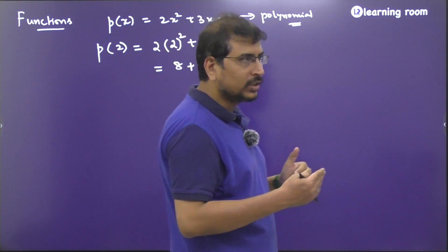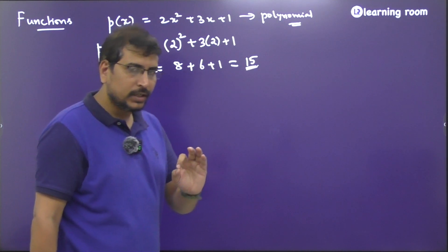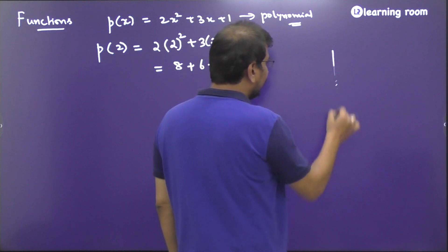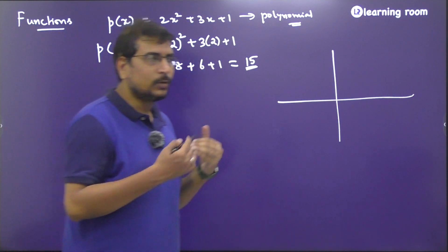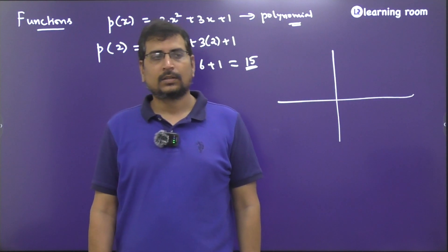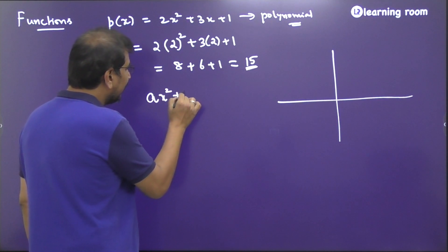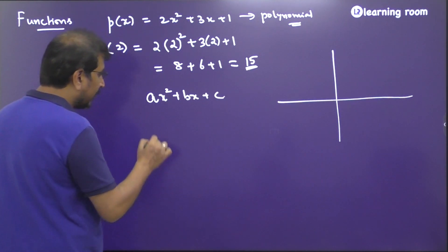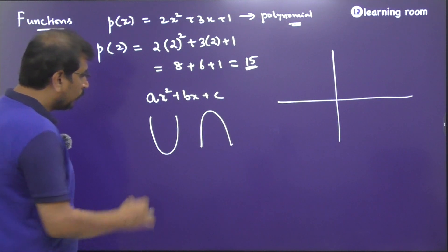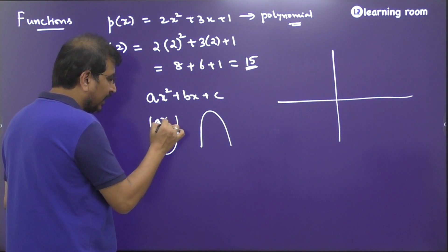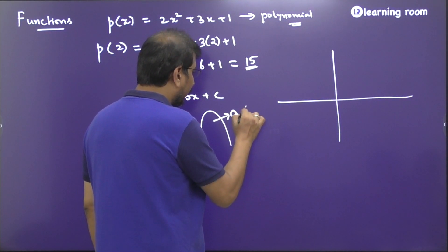What is the mathematical significance of this value? You called it a quadratic polynomial. If you take this expression and plot it on a graph sheet, a quadratic polynomial gives us a parabola — not a straight line. So ax² + bx + c is a parabola. You'll have an upward parabola when the coefficient of x², that is 'a', is greater than 0, and a downward parabola when 'a' is less than 0.